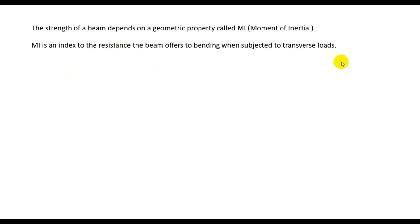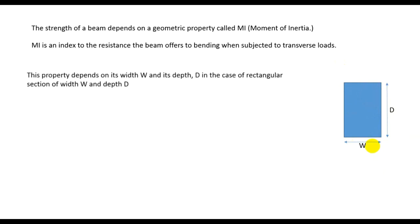Suppose this is a beam cross section. Its height is D and its width is W - depth D and width W. So this property depends on its width W and its depth D.